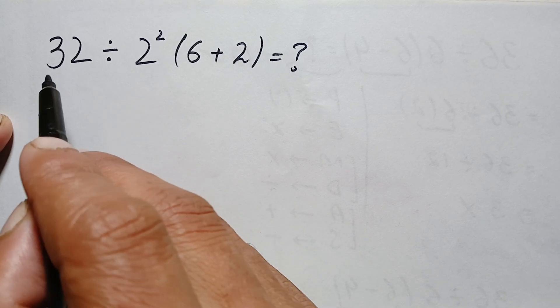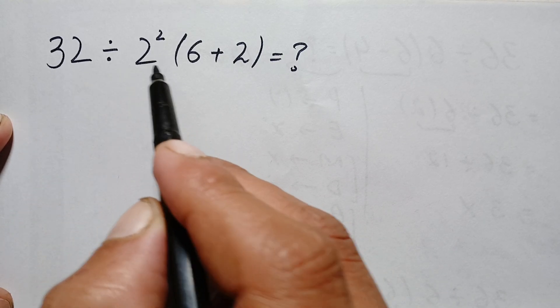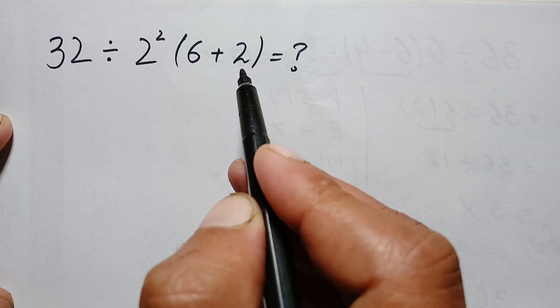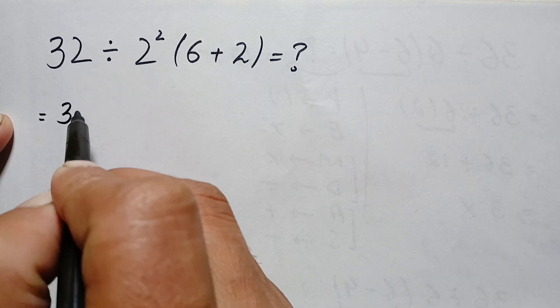What is the value of 32 divided by 2 squared times 6 plus 2? So it is simply 32 divided by...